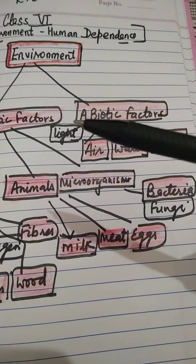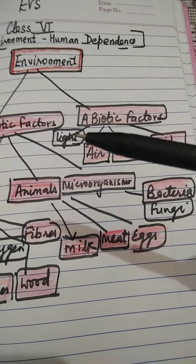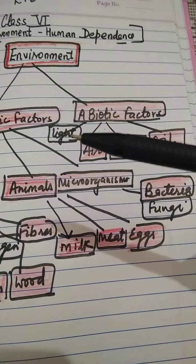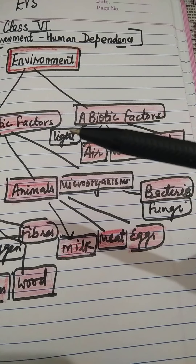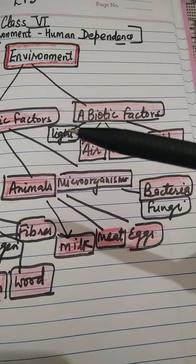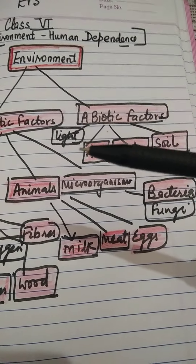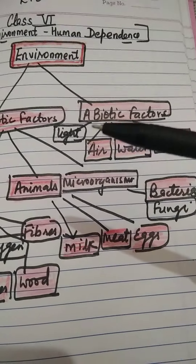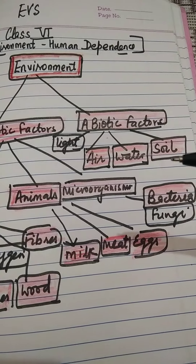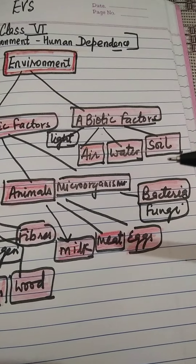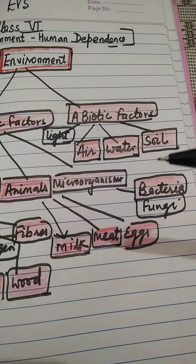Sunlight enables photosynthesis, which provides us with food and oxygen. Sunlight is also a source of energy for other purposes. Soil provides human beings with food by helping plants to grow, and also provides us with various minerals and fuels.